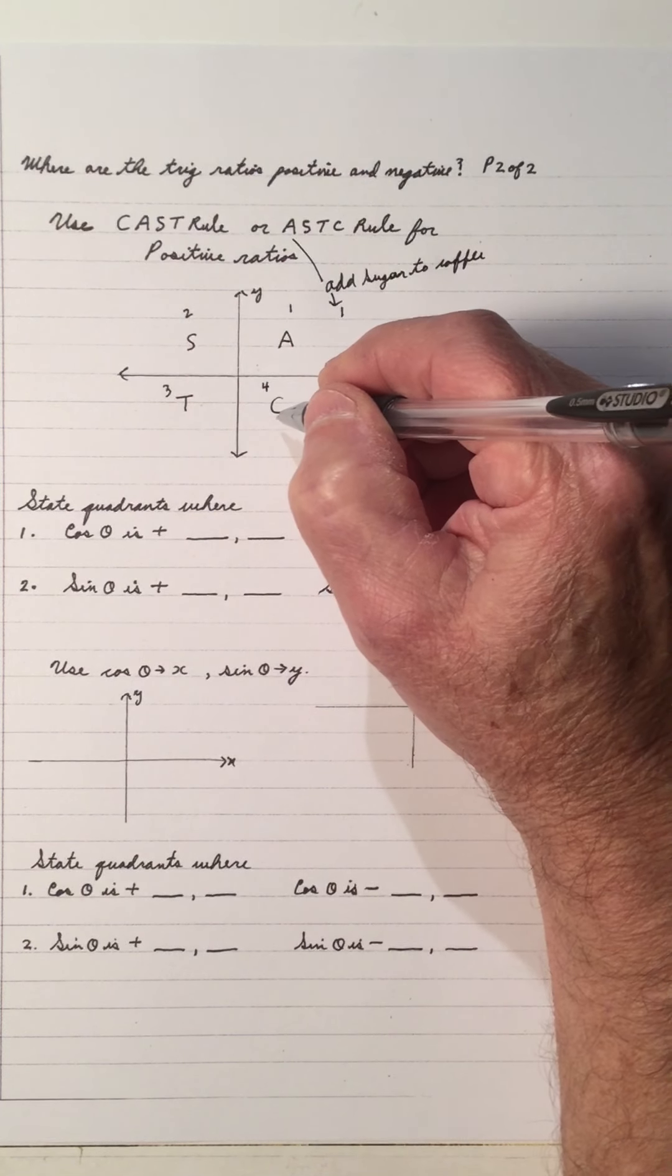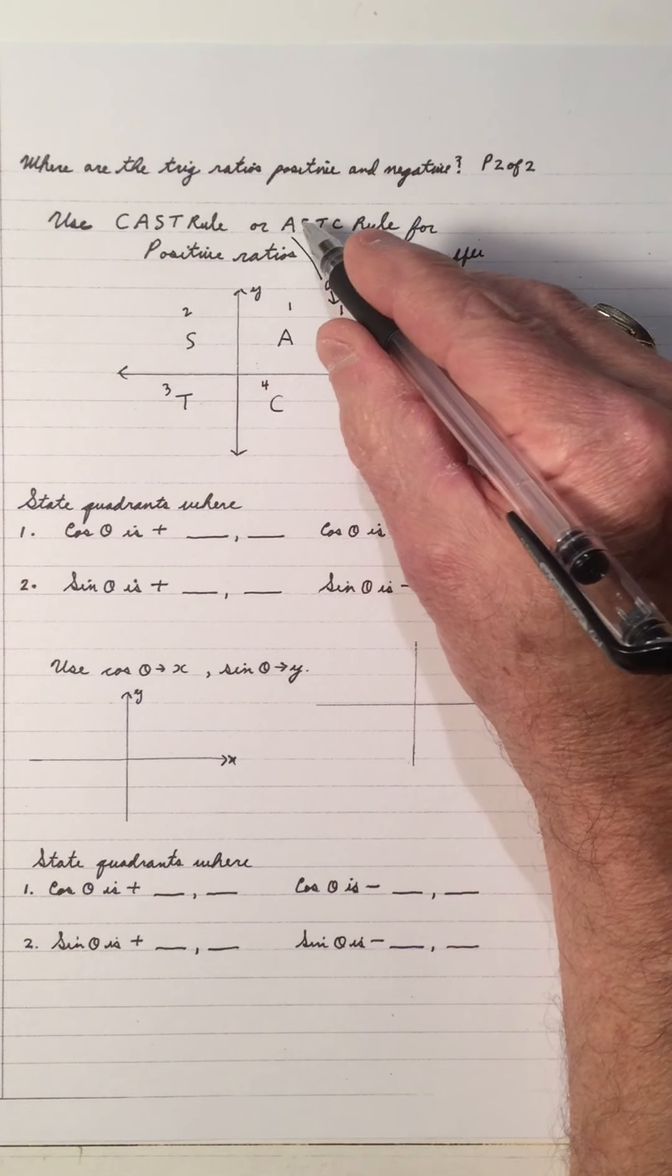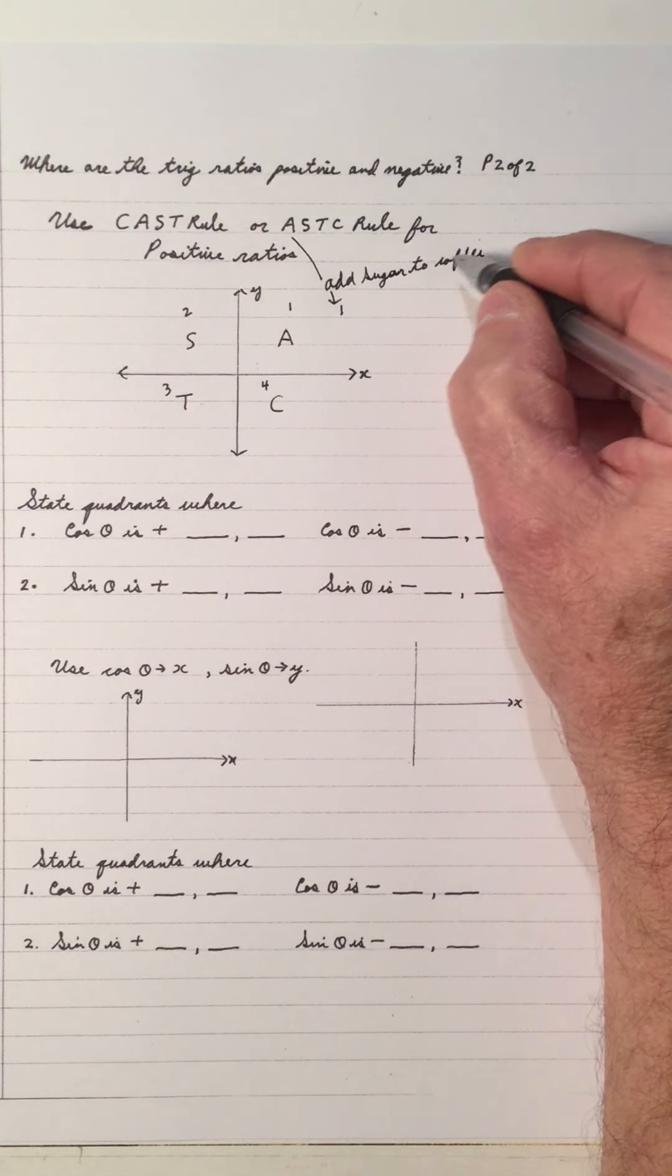Whereas the CAST rule starts in quadrant 4. So whatever way you memorize it makes a difference.